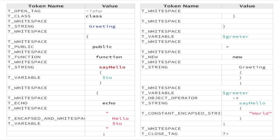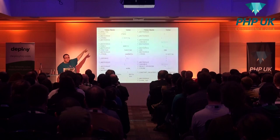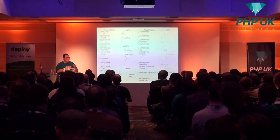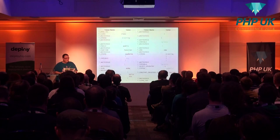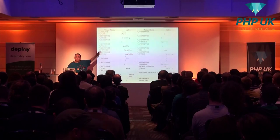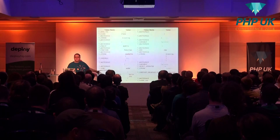So this is what tokens look like. Tokens typically consist of two things: a name which identifies the token — internally they're numbers, a constant that identifies the token — and then a value for it. Some of them, like curly braces, parentheses, quotes — anything that's basically a single character — doesn't have a token associated with it because it would be larger than the character itself. Looking at this code, we can see we have an open tag, our class keyword, some whitespace, and a string identifier of Greeting.